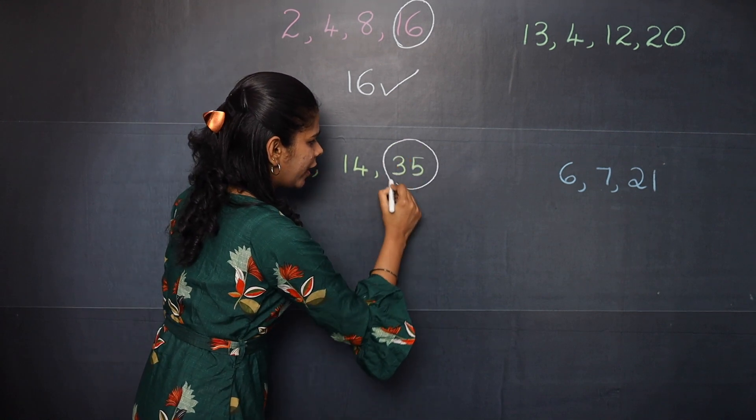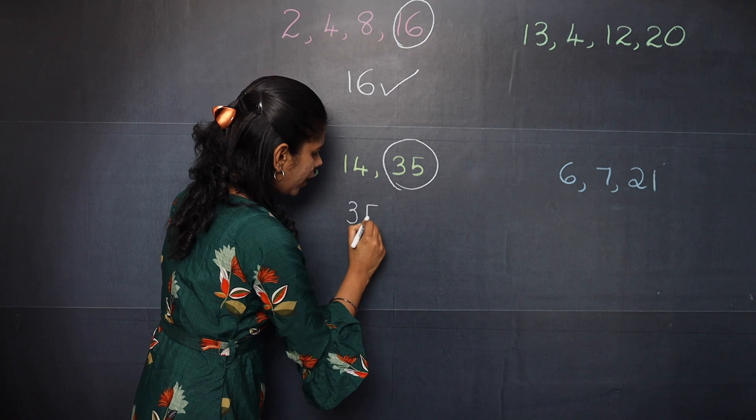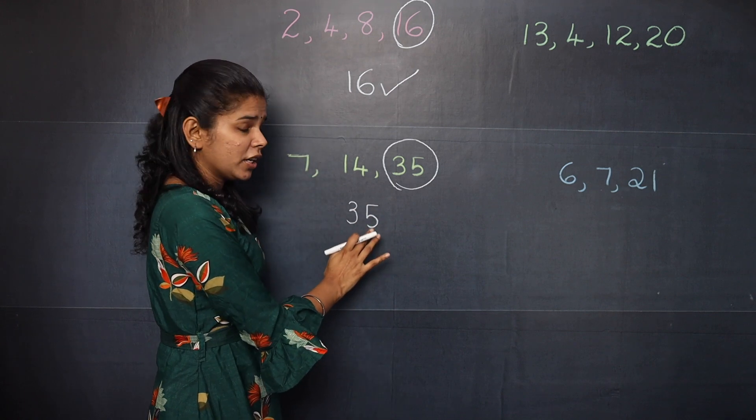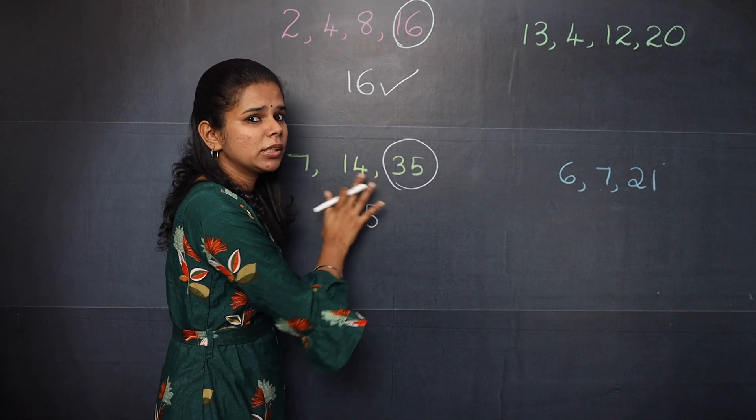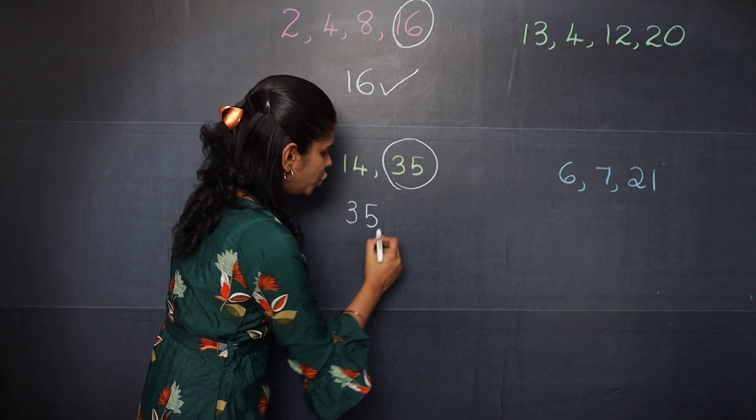Here the bigger number is 35. So when you take 35, you can see 35 is divisible by 7 but it is not divisible by 40. So in that case, what you should do?